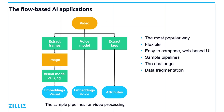How do people usually use AI technologies to analyze unstructured data? A flow-based AI application is a typical example. Assuming we're going to analyze a video, we can create some operation streams, usually called pipelines. The leftmost pipeline captures the video frames and extracts features from the captured image. For example, we use the VGG model, a model with excellent generalization capabilities. Images go in and feature vectors come out.